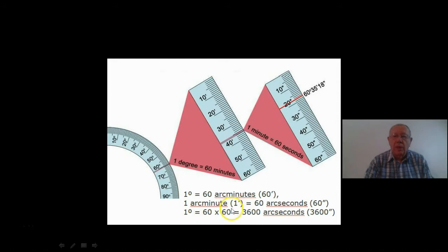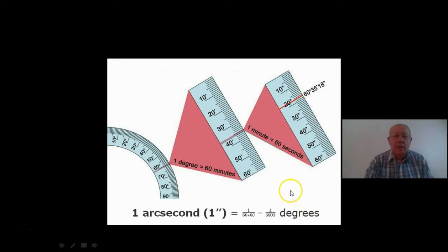Another way of looking at it is to say that one arc second is one three thousand six hundredth of a degree. Now the relevance of all of that is when it comes to looking at what we call the arc second.